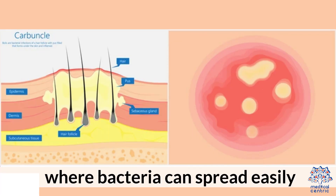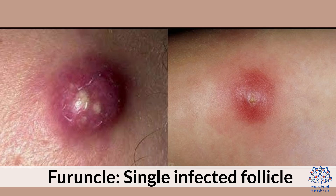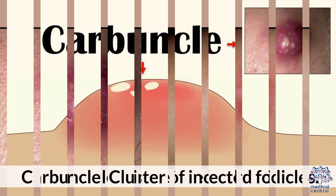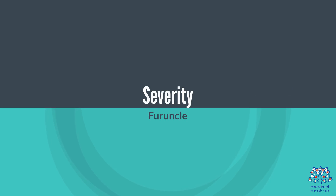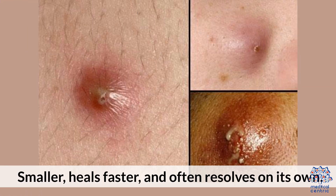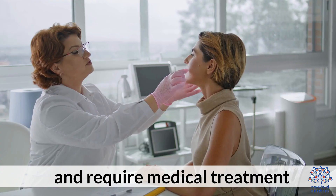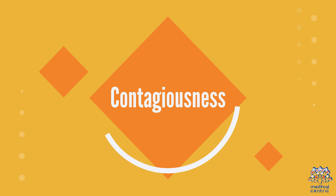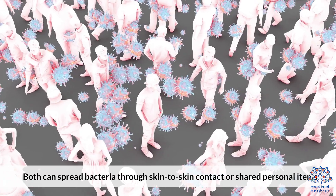Key differences between farruncles and carbuncles: In terms of number of infections, a farruncle involves a single infected follicle while a carbuncle involves a cluster of infected follicles. In severity, a farruncle is smaller, heals faster, and often resolves on its own, whereas a carbuncle is a larger, deeper infection that may cause fever and require medical treatment. Both can spread bacteria through skin-to-skin contact or shared personal items.